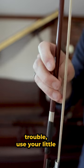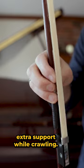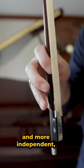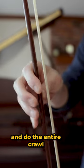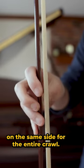If you are having trouble, use your little finger as a clamp to give yourself extra support while crawling. Once your fingers get stronger and more independent, challenge yourself to not use the clamp and do the entire crawl with all four fingers on the same side.